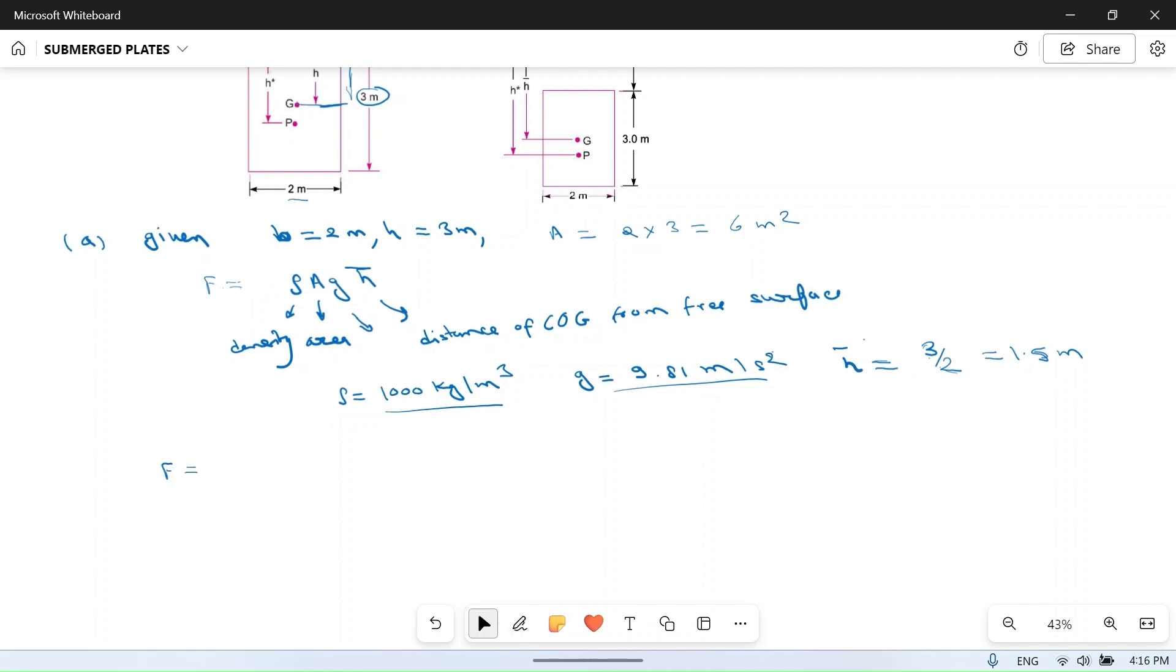The total force F or total pressure is equal to - see, pressure is force per unit area, but total pressure equals force because we are multiplying with area already. So ρ is 1000, A is 6, g is 9.81, h̄ is 1.5. If you multiply everything you will get 88,290 Newton. So this is total pressure acting on this plate.